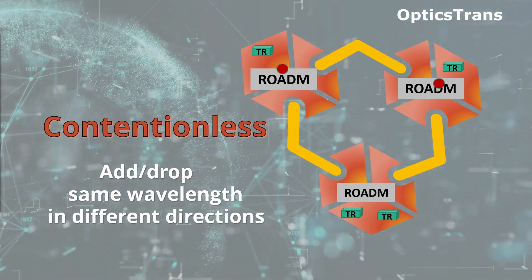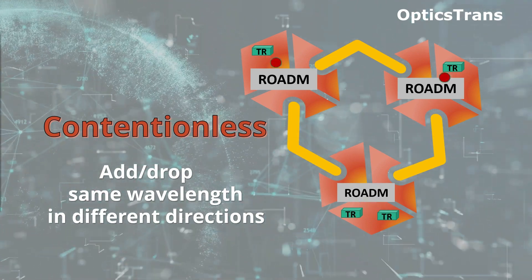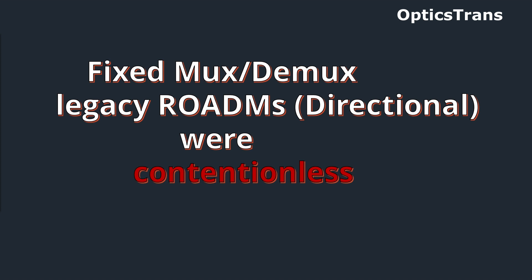This might come as a bit of a surprise, but fixed mux-demux legacy ROADMs in directional configuration were contentionless. Let's understand this from a legacy configuration — we have directional — and then we'll move to directionless and look at how contention occurs.